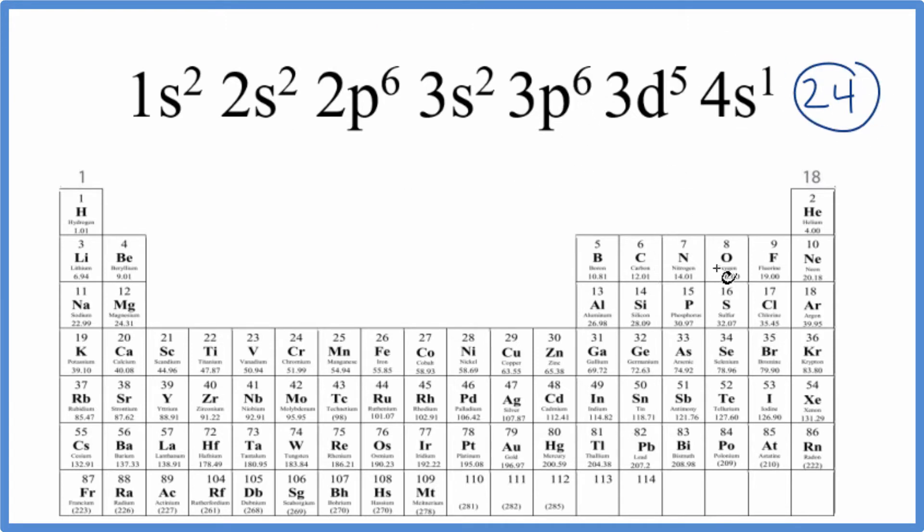On the periodic table, all of these elements are neutral. That means the number of protons equals the atomic number. Since they're neutral, the number of protons equals the number of electrons. So all we have to do is find the element with atomic number 24.